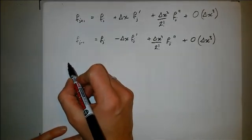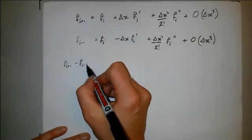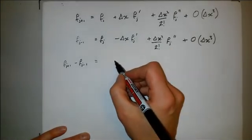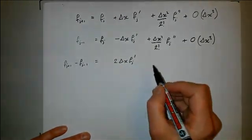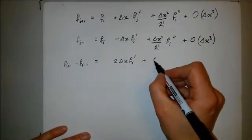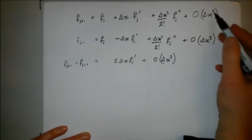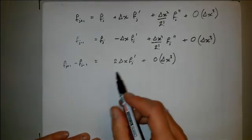So that's going to give me f_{j+1} minus f_{j-1} is equal to, that minus that disappears, that minus that is 2 delta x f'_j, that minus that disappears, so I've just got plus terms of order delta x cubed, and they don't cancel out because the constants of proportionalities are likely to be different.